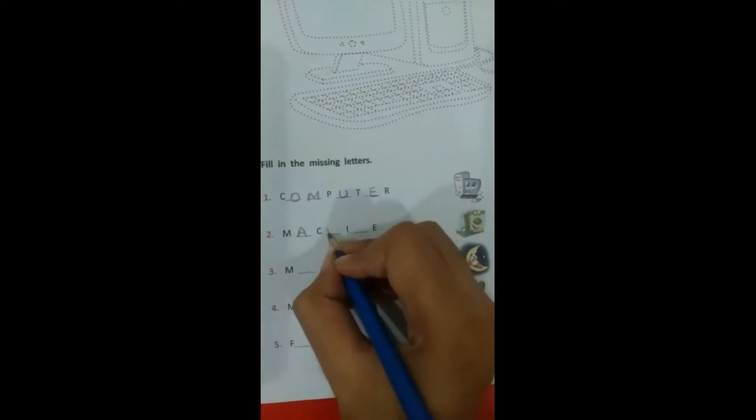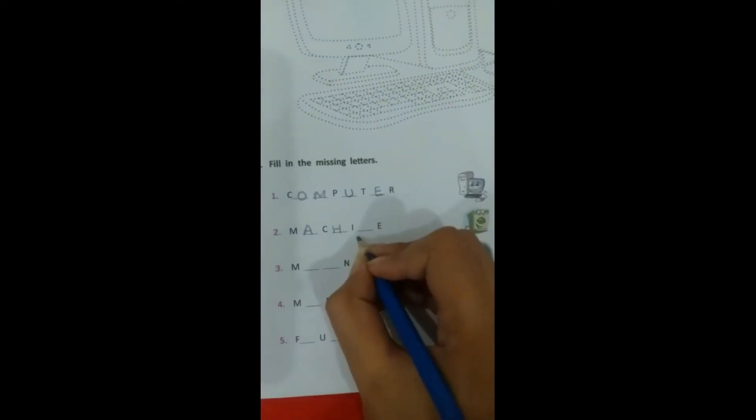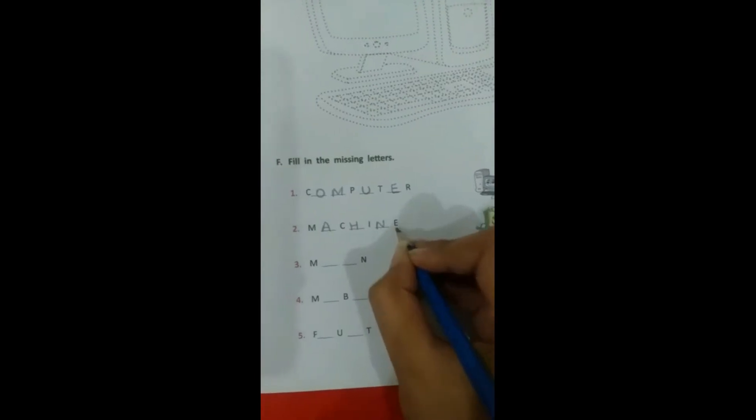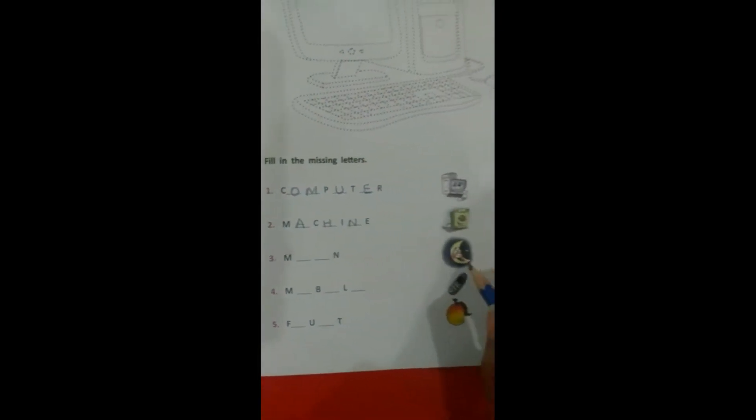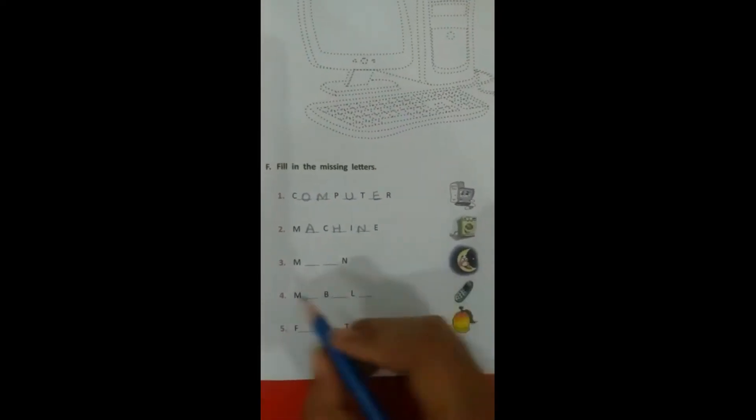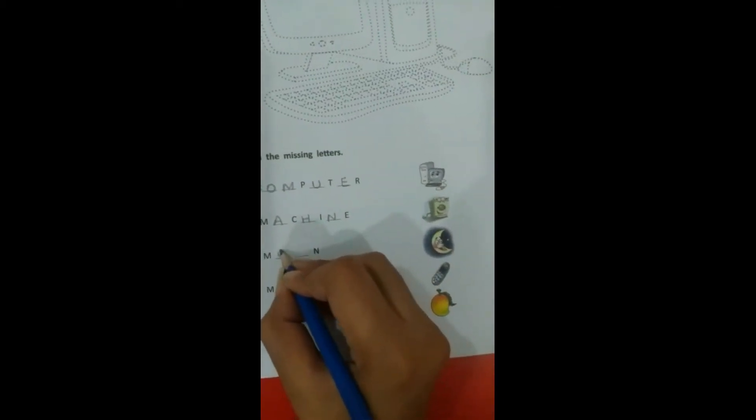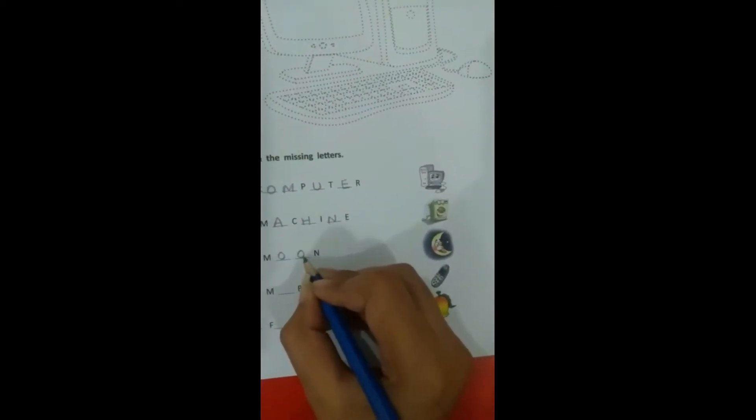Then H, then I, then N, then E. Machine. Number three, moon. That is M, then O, O, then N. Moon.